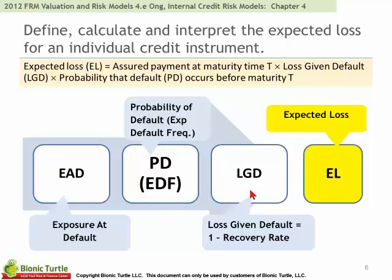Loss given default is not so simple — it is difficult to parameterize. If we see a loss given default of 65%, that point estimate is very imprecise. It's more appropriate to give it a range, or even a flexible distribution. The most common distribution for loss given default is the beta distribution, whose variance is non-trivial, so you will always be given that input on the exam.